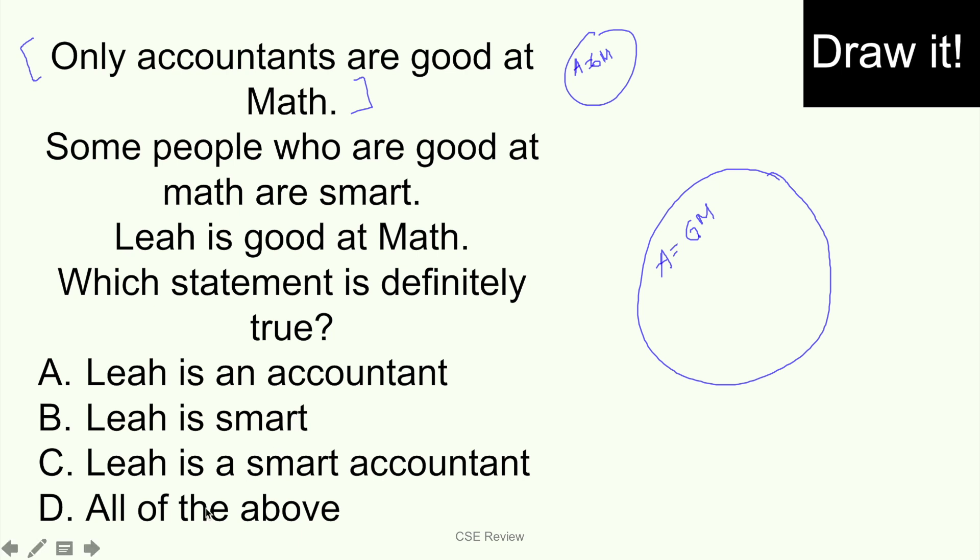Okay? Magpapalit lang ako ng pen color so I can show you the second line. Ang second line natin, some people who are good at math are smart. Okay? So some people, ano ibig sabihin nun? Yung mga good at math, some of them daw are smart. Dahil meron ka ng existing na circle dito na GM or good at math. Okay? Ang gagawin na lang natin is pagsasamahin natin siya sa isang diagram. So kukurot tayo dito. Some of them are smart. And then that is yung ating drawing ng second line. After that, we can move on dun sa ating question.